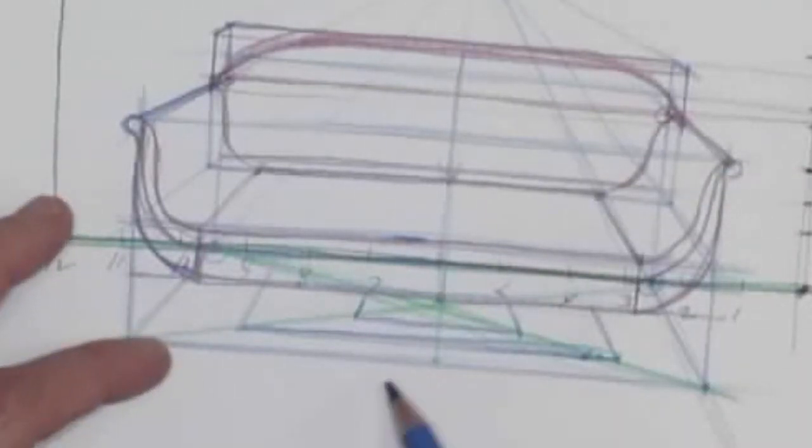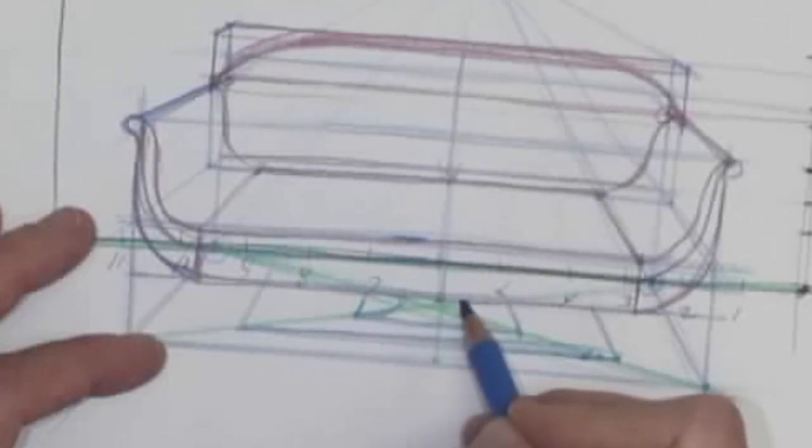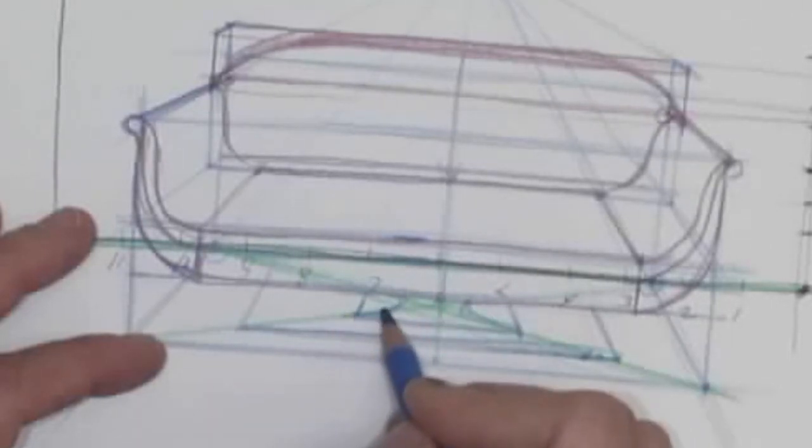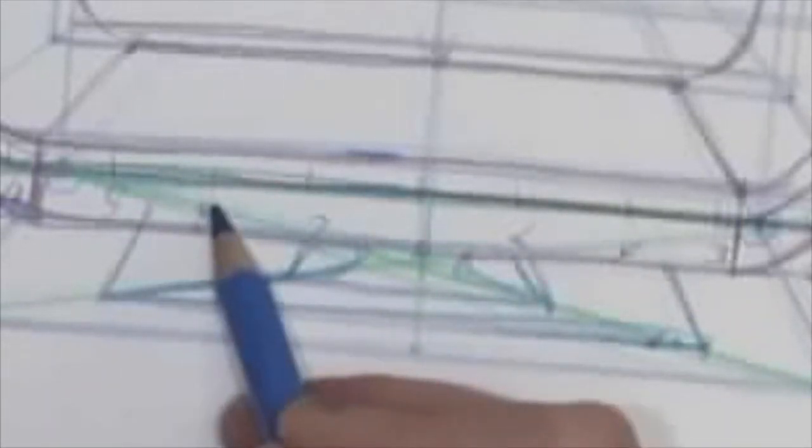And then it's just a matter of making a little curve here. And this line is one we need. This line is one we need. Because it shows us where the back is. Now, we're not going to see these two lines at the back. We only see them at the front.